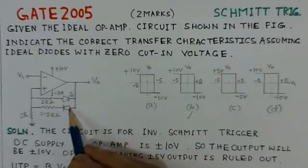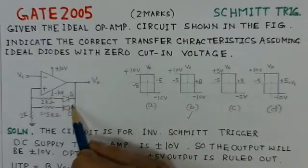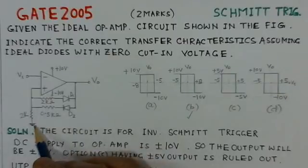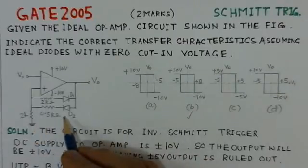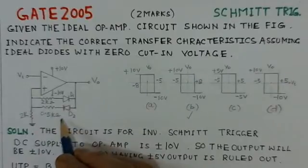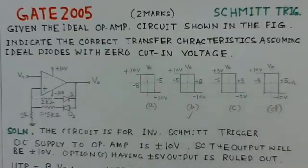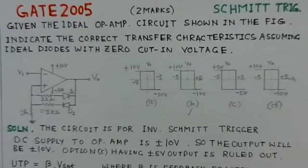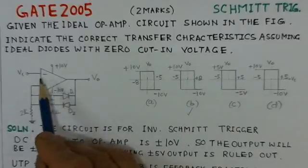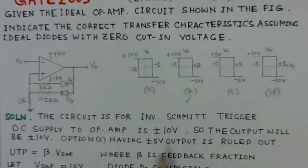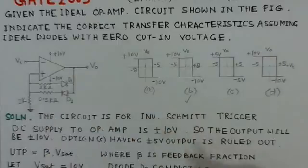This circuit gives UTP and LTP points at different levels. We have to identify which transfer characteristic corresponds to this circuit. Since the input is applied to the inverting input, it is an inverting Schmitt trigger. The DC supply to the operational amplifier is plus and minus 10 volts.